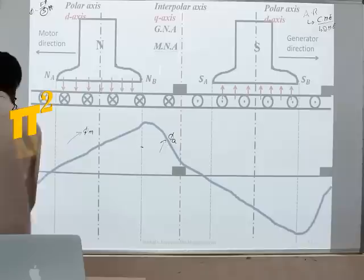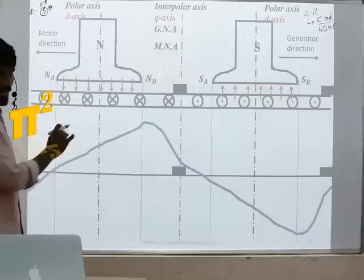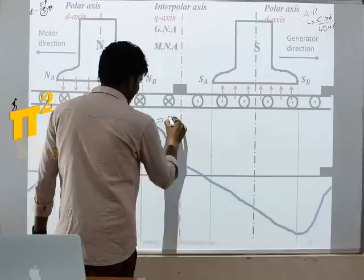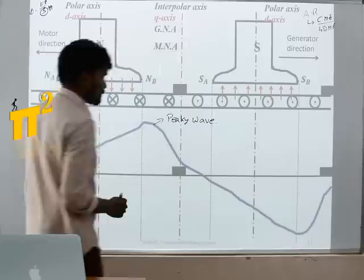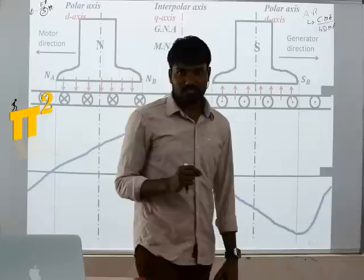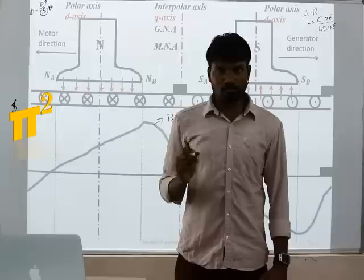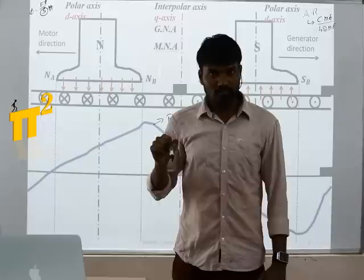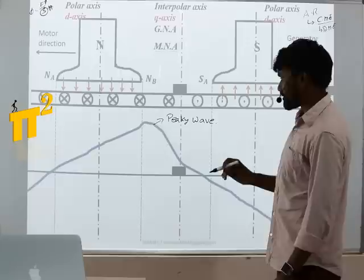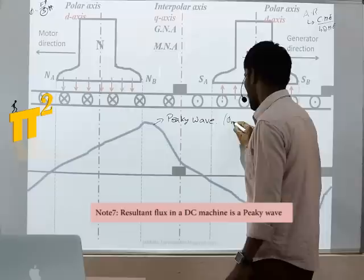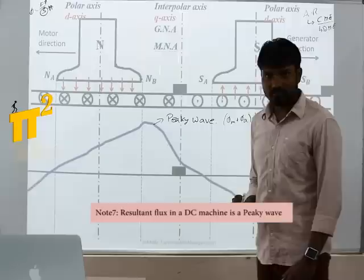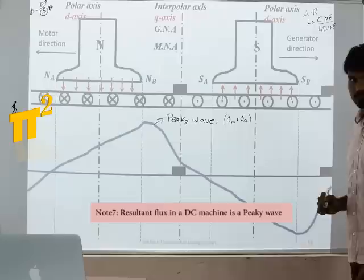If we observe the resultant peaky wave, the shape has changed from the original trapezoidal main field flux. If we had only φM it would be trapezoidal. The peaky wave shape arises due to the armature flux. Now focusing on this peaky wave resultant flux, the magnetic neutral axis MNA has shifted to a new point.